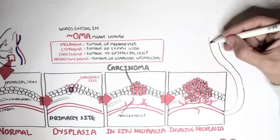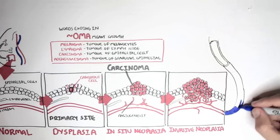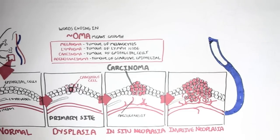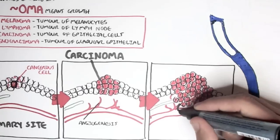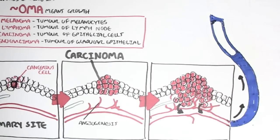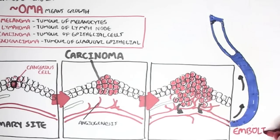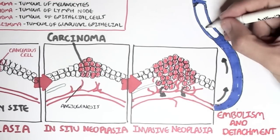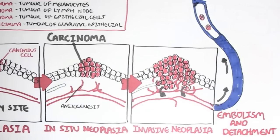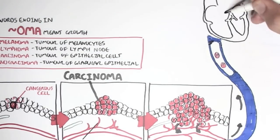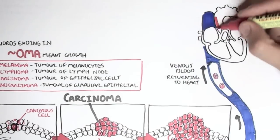Here the blood supply is drawn in blue because it's a vein returning to the heart. These cancerous cells will enter the blood supply and move towards the heart, so the embolization and detachment of cancerous cells occurs. These cancerous cells will enter the circulation, and in most cases they are destroyed by immune cells, which recognize them as abnormal. However, if the cancerous cell survives, it will be transported into the heart via the vena cava and essentially be pumped somewhere.